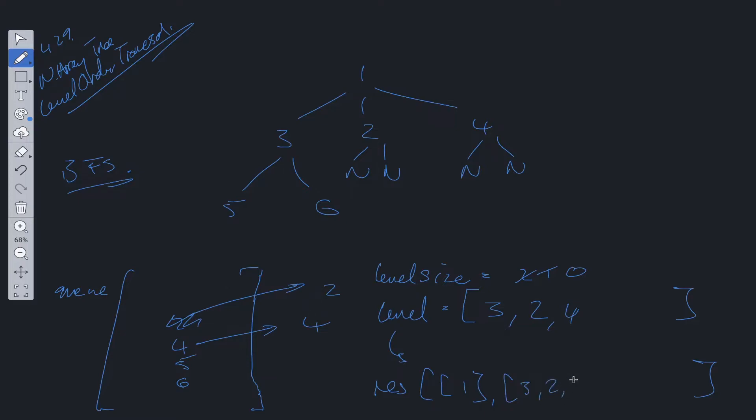We have 5 and 6 left in queue. That means the level size is equal to 2. Now we can shift off of queue. Check 5. 5 doesn't have any children. So we add that into level. We decrement level size to 1. We do the same with 6. So we shift off of queue, the value of 6.